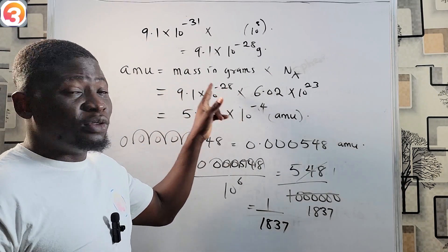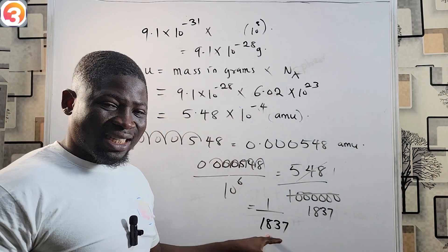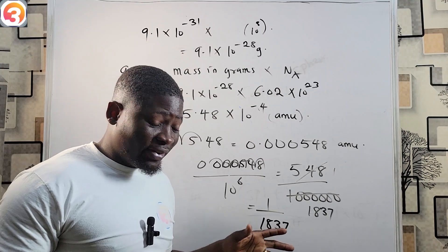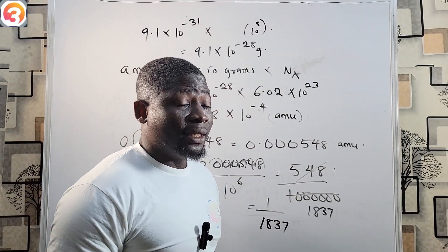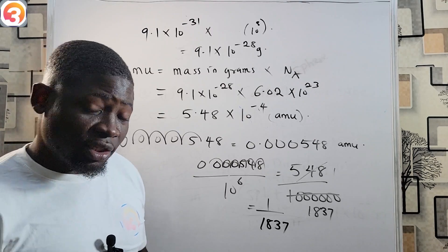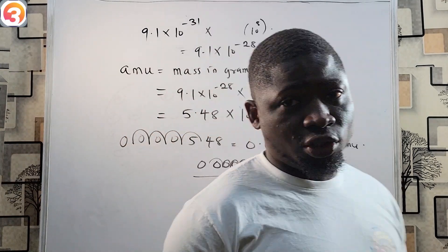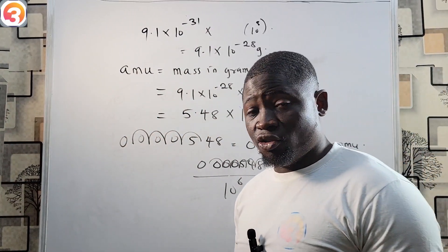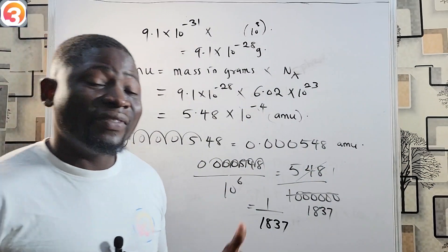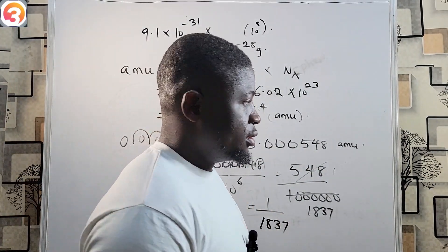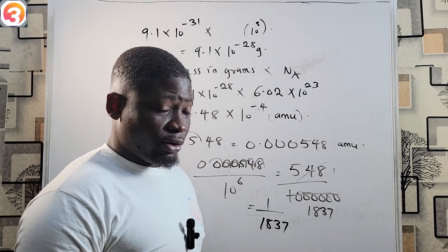We converted from kilograms to grams, then from grams to atomic mass units, and reduced it to 1/1837. That is all you need to know about JJ Thompson's theory of the atomic structure. He was also widely regarded as the first man to split the atom — put that into memory.